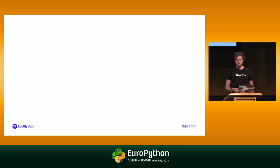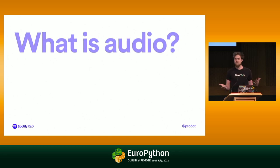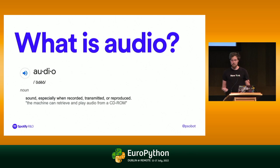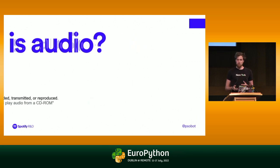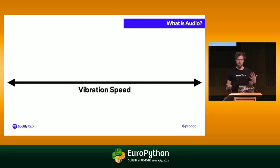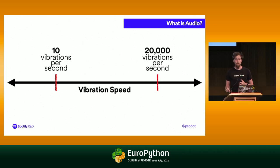Let's start with the absolute basics. Audio is sound, especially when recorded, transmitted, or reproduced. Sound is really just any vibration through the air that isn't too slow or too fast for our ears to pick up. Our ears are sensitive to a range between about 10 vibrations per second all the way through to 20,000 vibrations per second. Towards the lower end you have bass guitars and car engines; in the middle, the human voice and musical instruments; towards the top, birds chirping and high-pitched sounds.